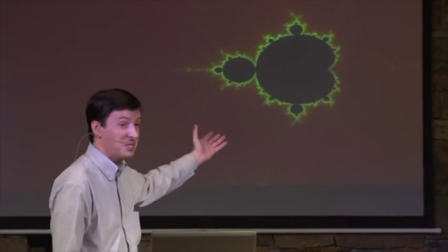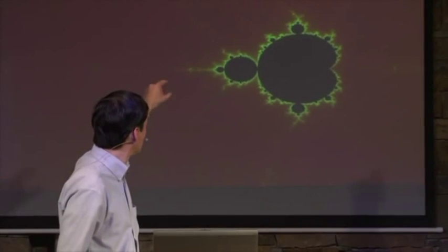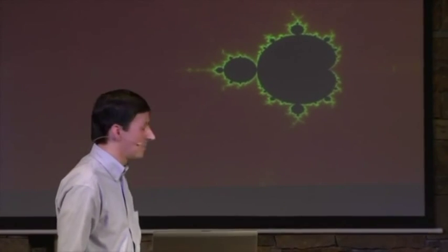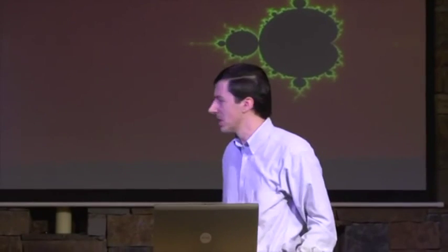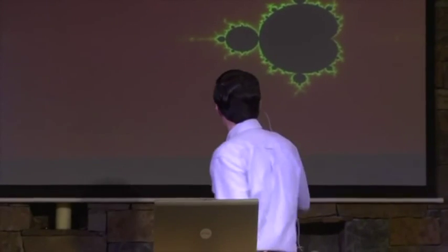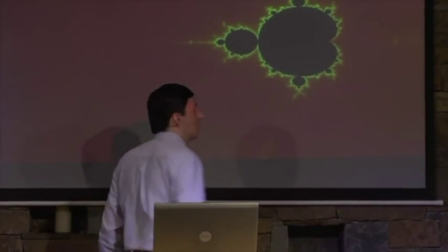Isn't that interesting? It's a baby version, right? It's the same basic shape as the parent. It's got the cardioid, and you've got the little circles growing off of it. It's very similar, but it's not identical. It has extra spikes growing off of it that the parent didn't have. They're very faint, but the parent didn't have these extra spikes.